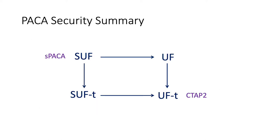To summarize our PAKA security notions: we have the simple relation that SUF implies UF. We know that SPAKA achieves the strongest security and CTAP2 only achieves the weakest, UFT. We also have separation results in our paper showing that UF and SUFT do not imply each other.